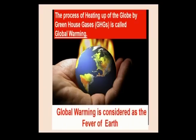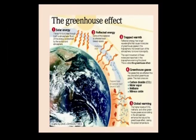Global warming is considered to be the fever of the Earth. Our body temperature is 98.4 degrees Fahrenheit; if it rises by 1 or 2 degrees to 100 degrees, we say we are suffering from fever. Similarly, when the Earth's temperature rises even by a few degrees, it is considered the Earth's fever. Just as a human being with fever needs treatment, the Earth also needs treatment for global warming — that is the treatment for the Earth from its fever. Now I am diagrammatically representing what is the greenhouse effect.